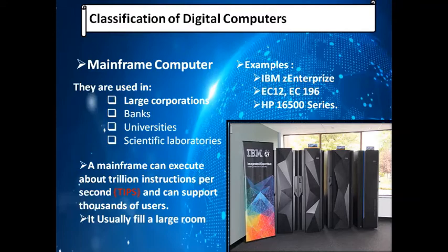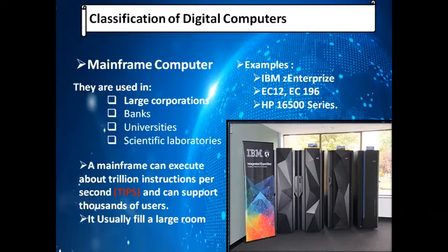Mainframe computers can support thousands of users at the same time — for example, in banks, trillions of users can do transactions simultaneously. Multiple thousands of users can attach to mainframe computers in universities and scientific laboratories too. They usually fill a large room with air conditioning, because many peripheral devices are attached. Examples include IBM Z Enterprise EC12, EC196, and HP 16500 series.